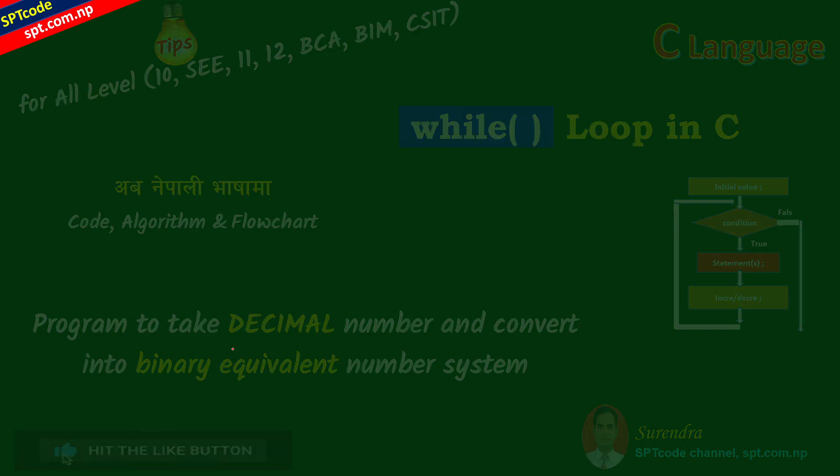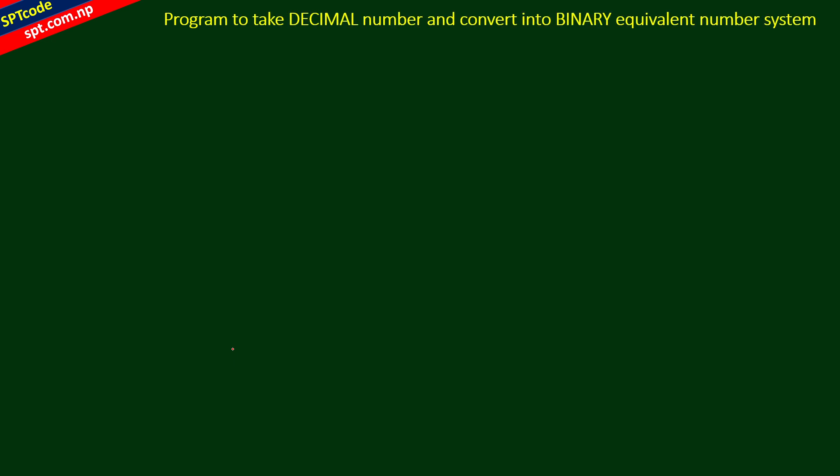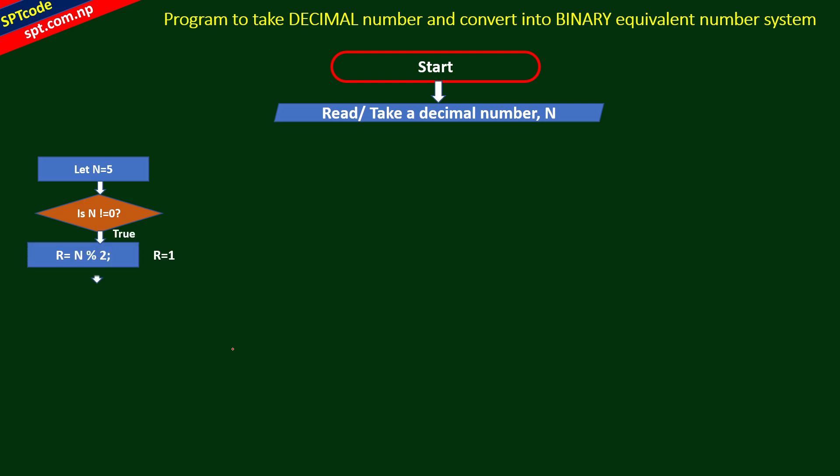We can develop the algorithm and flowchart to develop the logic. So we have a number, suppose 5. We calculate and set b equals 0. We divide the number and get remainder of 1.